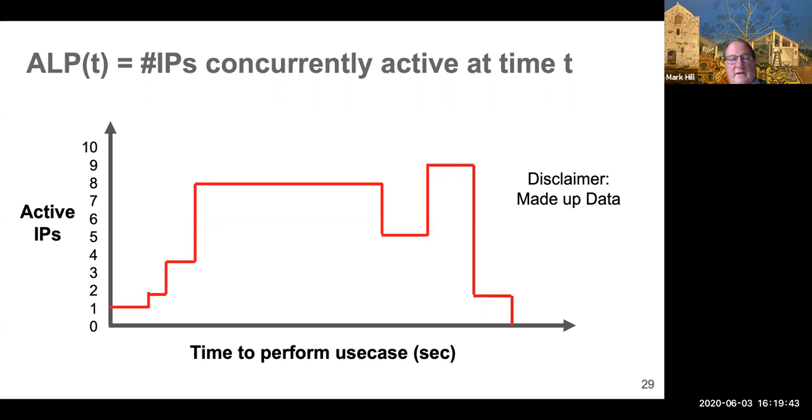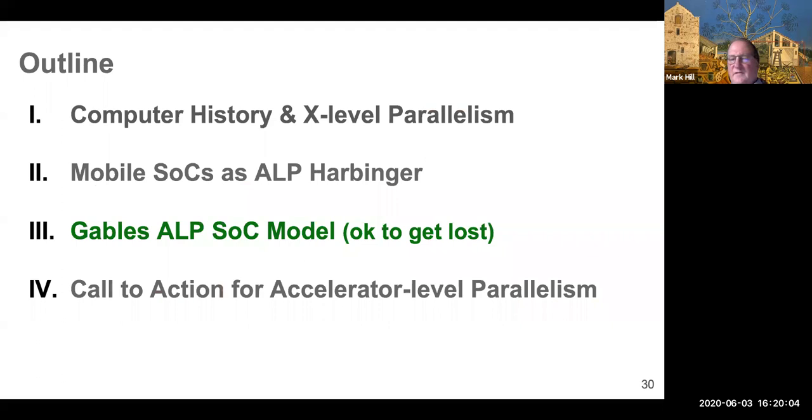Now, we should remember, by the way, within each of these IPs, there is a whole bunch of parallelism, right? So if one of the IPs is a GPU, it's going to have that SIMT parallelism. So this is hierarchical or recursive parallelism.